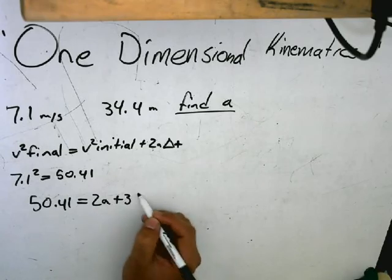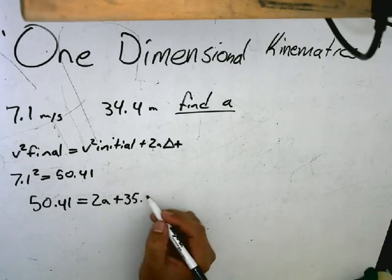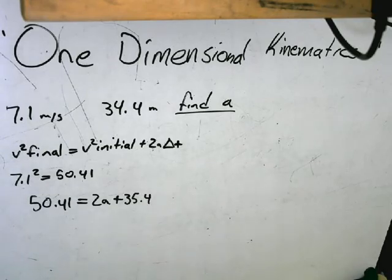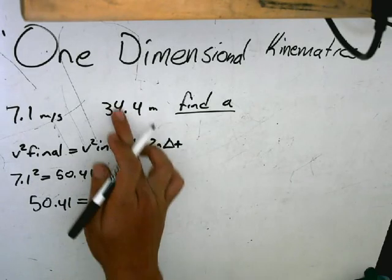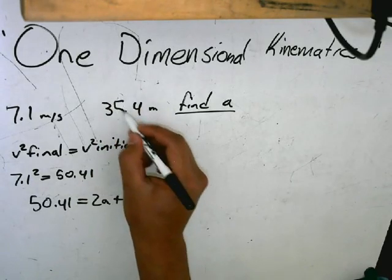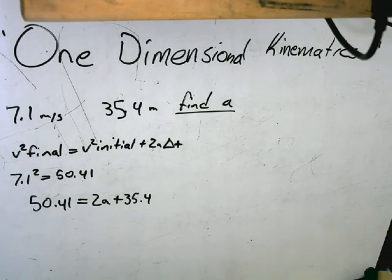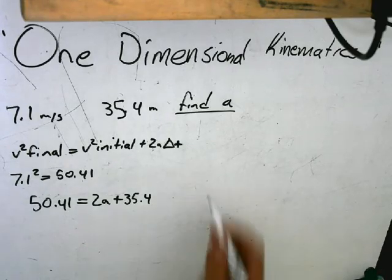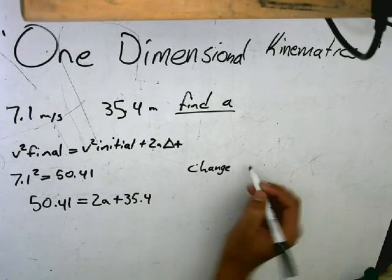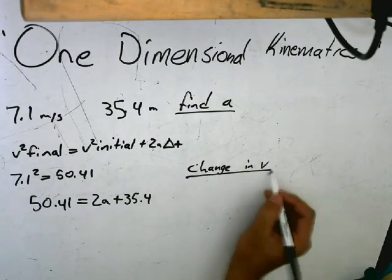We got 35.4 because he was traveling over a distance of 35.4 meters. So now we need to find the change in velocity over time.